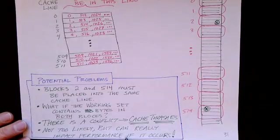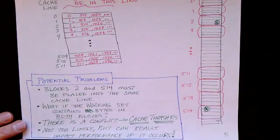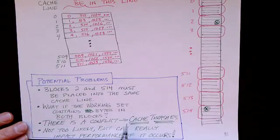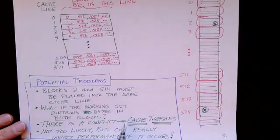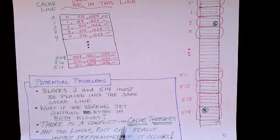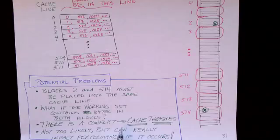So we can't really tolerate cache thrashing. And so this is why direct mapped caches by themselves, as I've described them, aren't quite adequate. But it's a starting point. And we'll move on to the general case in just a second and see how we can solve that problem.